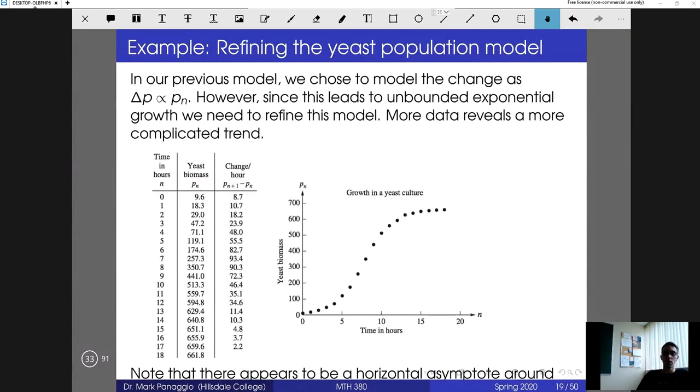In the previous model, we chose to model that the change in p is being proportional to the population itself. But as we saw, this leads to unbounded growth, exponential growth. If we want to improve the model, we're going to need to adjust this a little bit. And if you collect more data, you'll see that indeed there is evidence that this exponential growth does not continue.